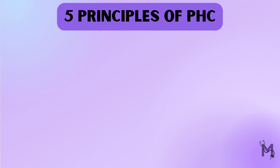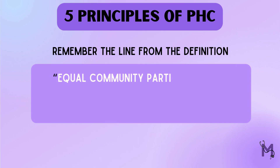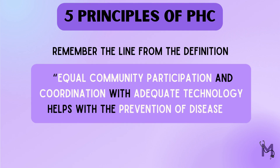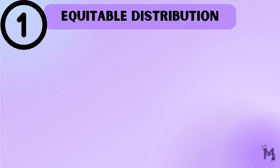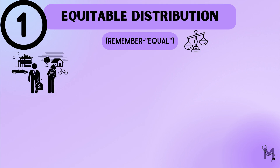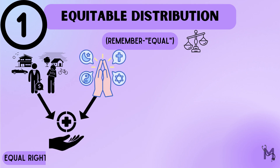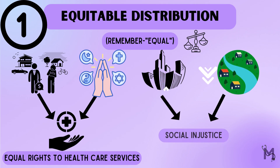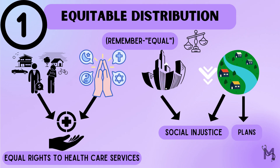There are five principles of primary health care. To remember them, use the line: 'Equal community participation and coordination with adequate technology helps with the prevention of diseases.' The word 'equal' helps us remember the principle of equitable distribution — every individual, irrespective of whether they are rich or poor, their caste or creed, has equal rights to access health care services. These services are more commonly used in urban areas than in rural areas, which is termed social injustice. Plans are being made to shift the gravity to rural areas where health care services are needed more.